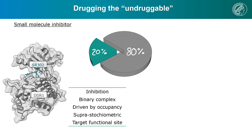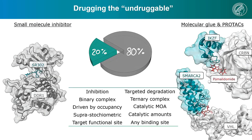Classic small molecule inhibitors usually bind to the active site of a target — in this case a kinase inhibitor to the kinase DDL1. This mechanism of action is almost always inhibition by occupancy-driven binding to a functional site. However, only 20% of the proteome can be addressed with this approach, while the other 80% remain undruggable. This is where molecular glues and PROTACs can theoretically address the other 80%, because any binding site can be used to recruit them to the E3 ligases, and the target is then eliminated instead of inhibited.